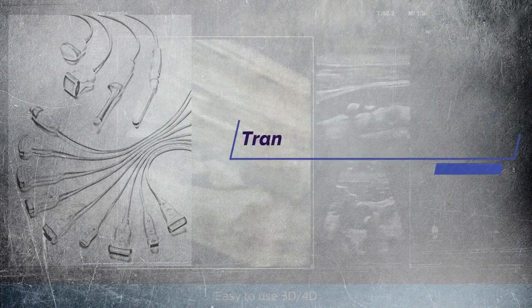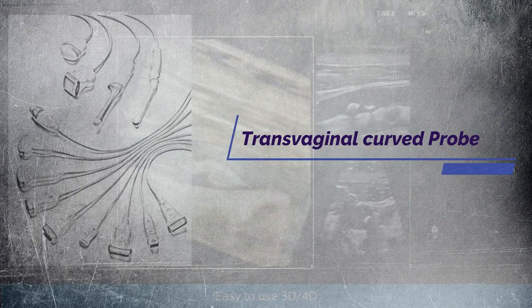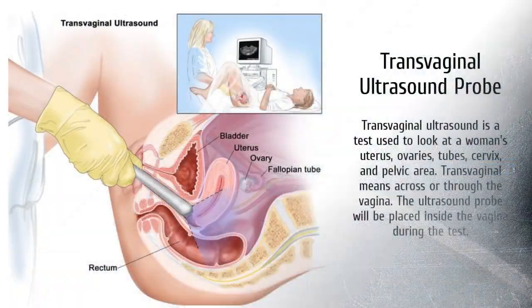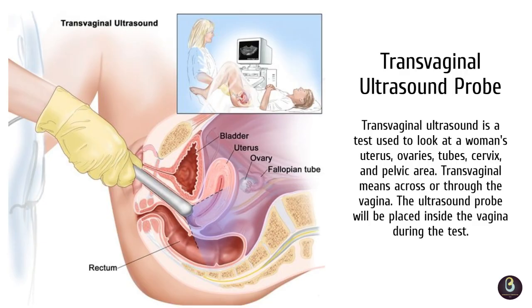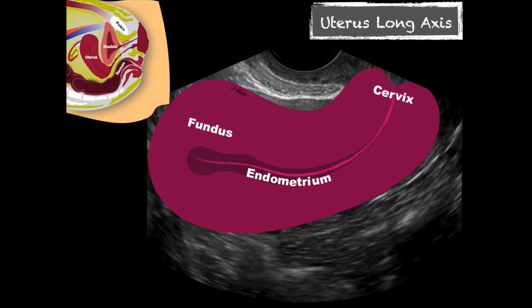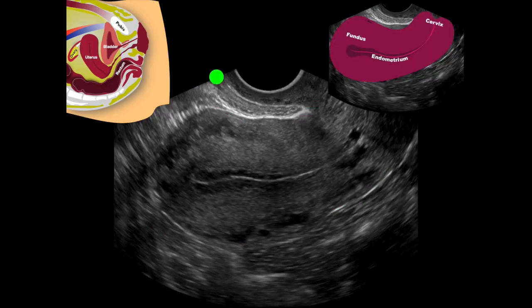Next is transvaginal curved probe. A pelvic ultrasound is a non-invasive diagnostic exam that produces images that are used to assess organs and structures within the female pelvis. A pelvic ultrasound allows quick visualisation of the female pelvic organs and structures, including the uterus, cervix, vagina, fallopian tubes and ovaries.